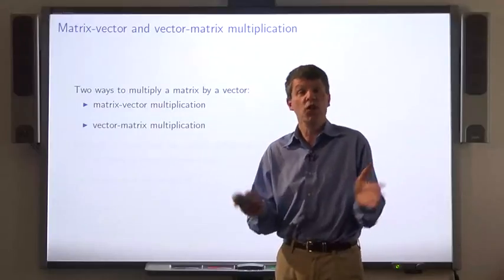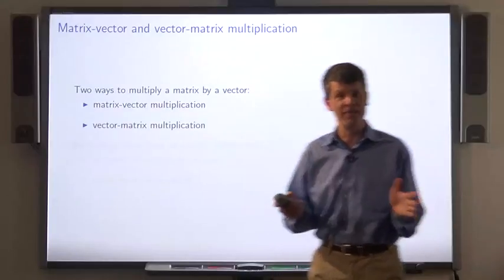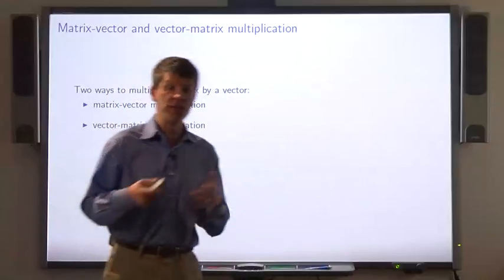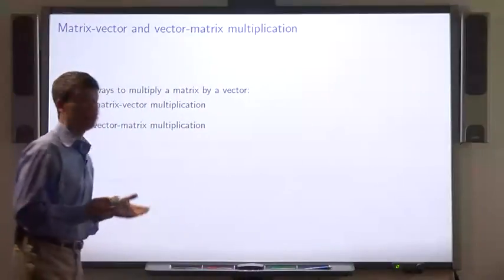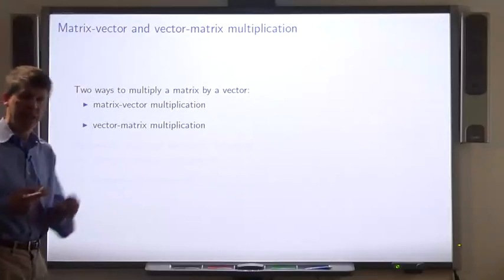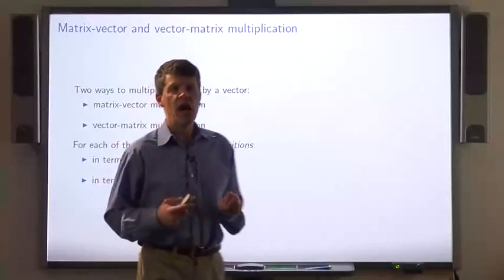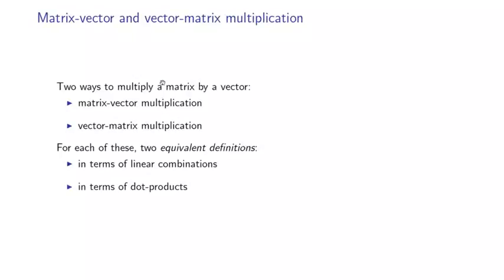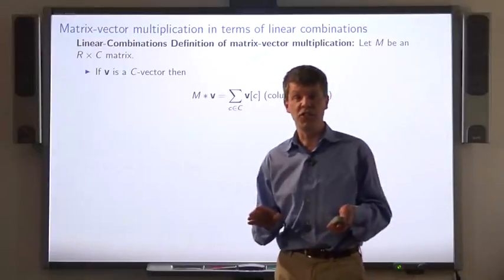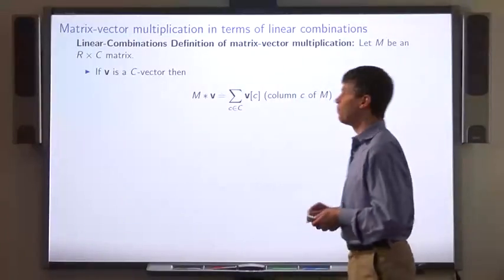What do we do with matrices? Mostly we multiply them by vectors. There are two ways to multiply a vector and a matrix. One is called matrix-vector multiplication, and the other is called vector-matrix multiplication. For each of these, I'm going to give two equivalent definitions. Which definition is most appropriate depends on the situation. We start with the linear combinations definition of matrix-vector multiply.